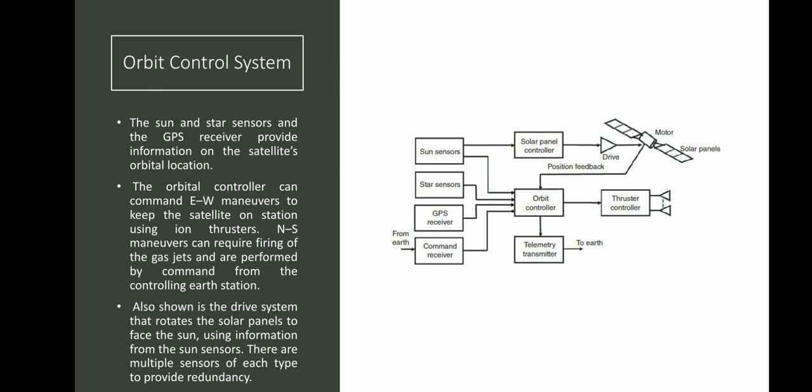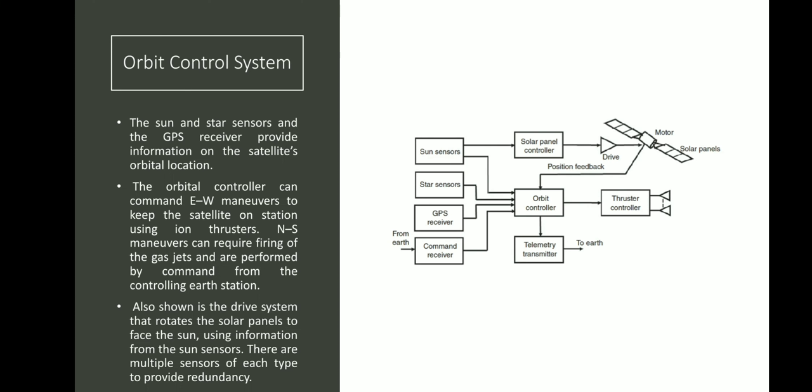Multiple sensors of each type are provided to give redundancy — if one sensor is not working, the redundant sensors come into use. That concludes our discussion of the orbit control system. Today we have covered the different satellite subsystems and a detailed discussion of the attitude and orbit control system. Thanks for watching.